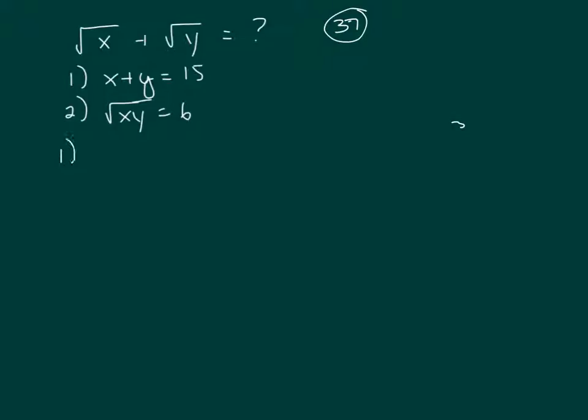So if you look at clue 1 only, x plus y is 15. We just got too many choices. You could let x be 1 and y be 14, or x could be 2 and y could be 13. So clue 1 doesn't work. You have too many possibilities.